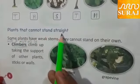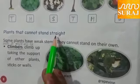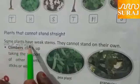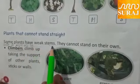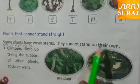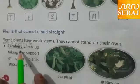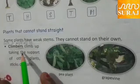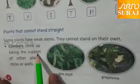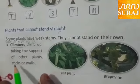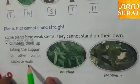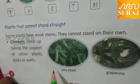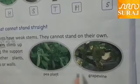Plants that cannot stand straight — some plants have a weak stem and they cannot stand on their own. Climbers climb up by taking the support of other plants, sticks or walls. For example, pea plant and grapevine.